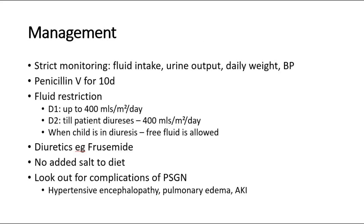The management for PSGN begins after confirming investigations — high ASOT, increased anti-DNase B, positive throat or skin swab, or other findings suggestive of PSGN. First, strict monitoring of the patient's fluid intake, urine output, daily weight, and blood pressure using nephrotic charting. Give penicillin V for 10 days to eliminate the beta-hemolytic streptococcal infection. If the patient is allergic to penicillin, erythromycin is used as an alternative. Fluid restriction is applied to control edema and circulatory overload during the oliguric phase.